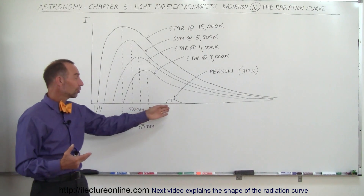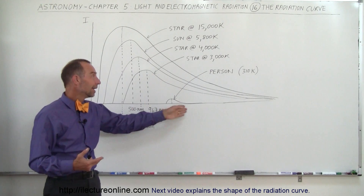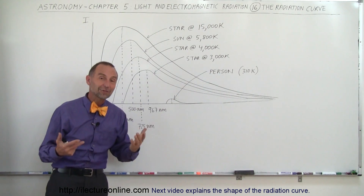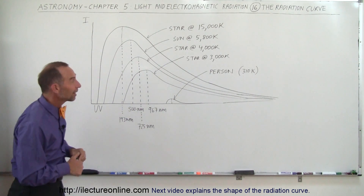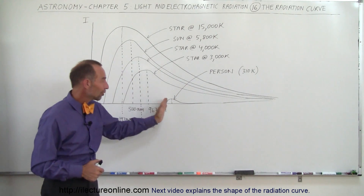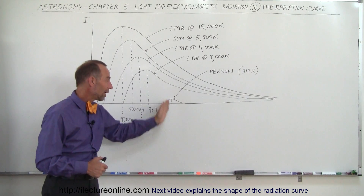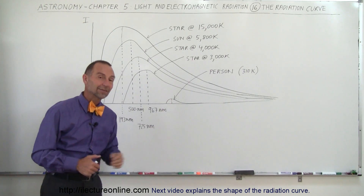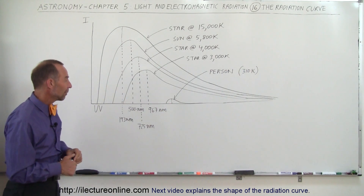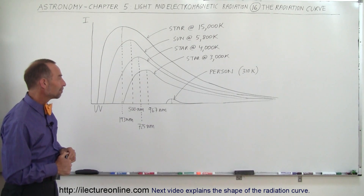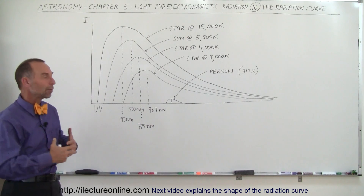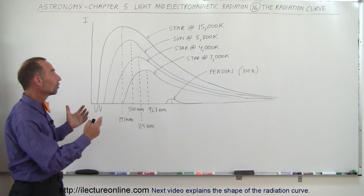And as a comparison, notice a human being at 310 degrees Kelvin — typically for body temperature — it has a curve far to the right, with a wavelength that is centered much farther into the infrared radiation band. So that gives you kind of a feel for what we call the radiation curve.